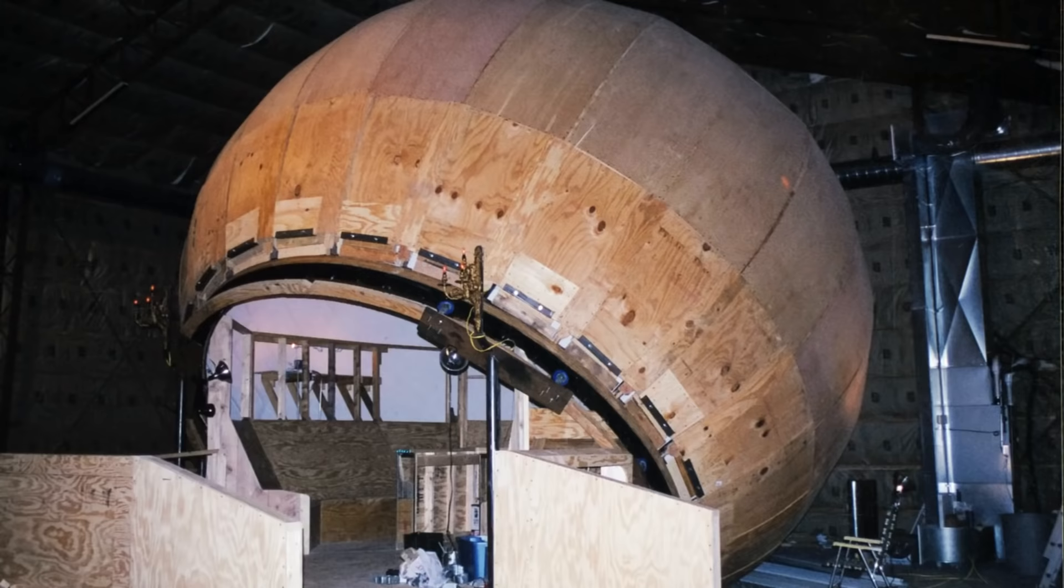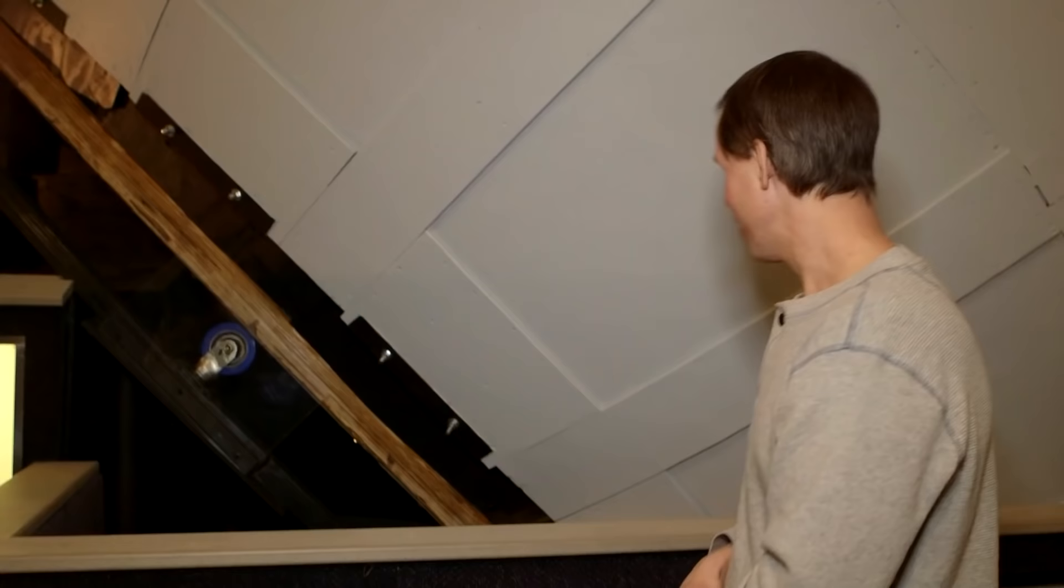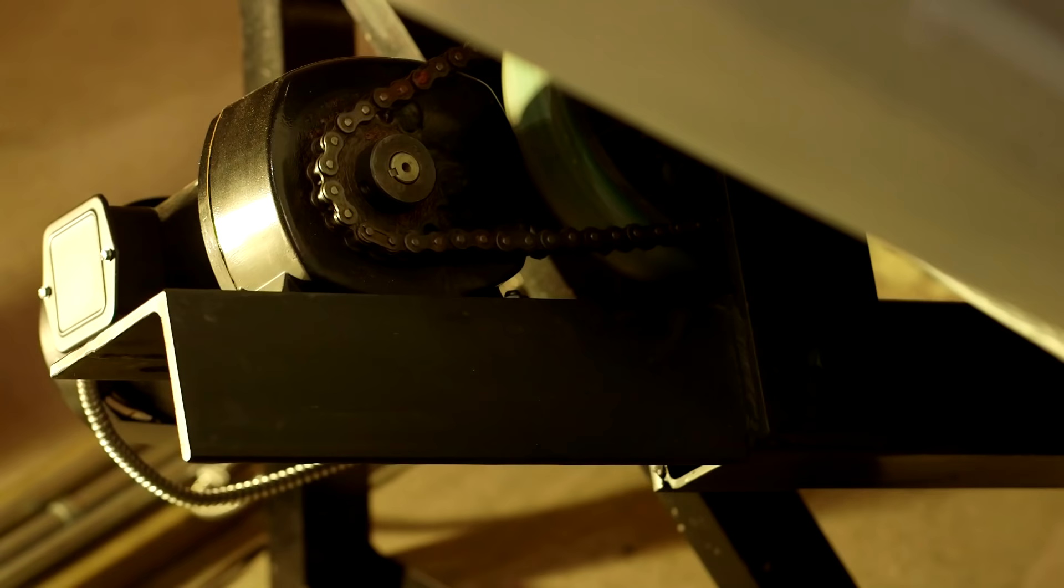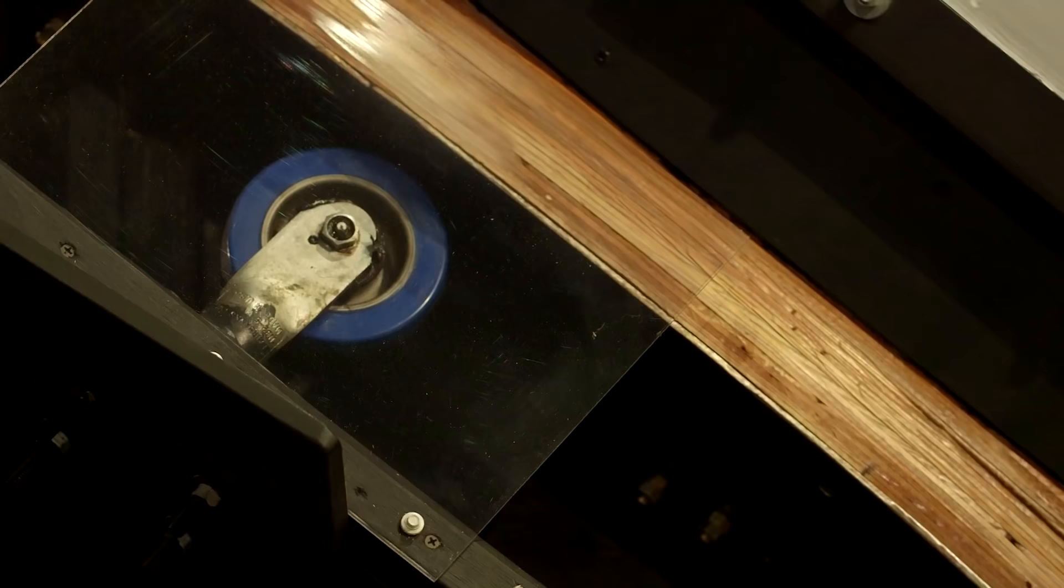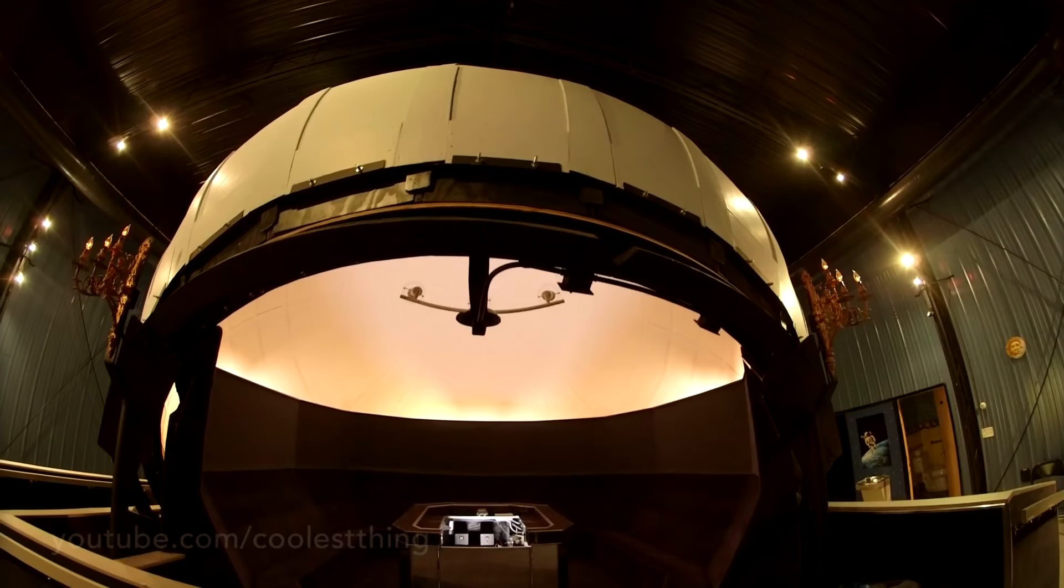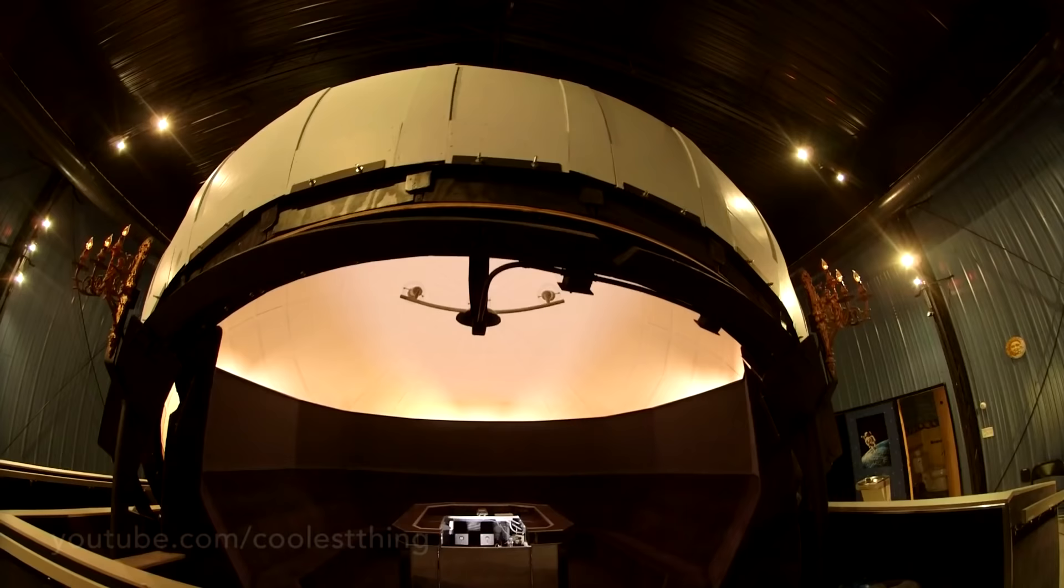The globe is mostly sheets of plywood, some panel board. The motor drive is a half horsepower gear motor. The globe itself is mechanically operated. It actually revolves around the audience. It's one of two others in the world and it's the largest.